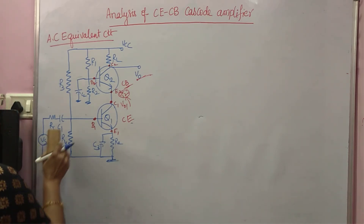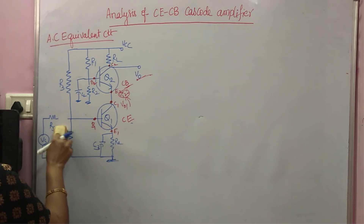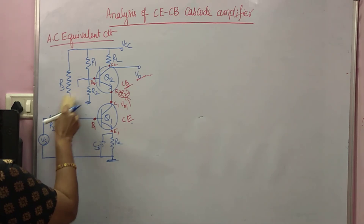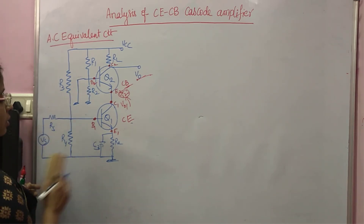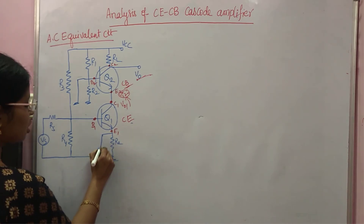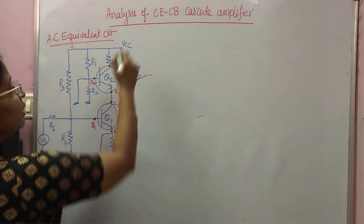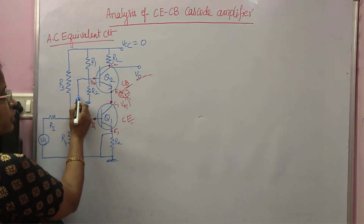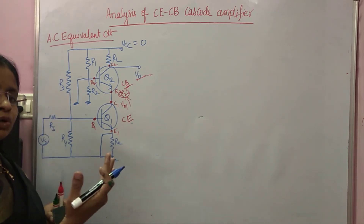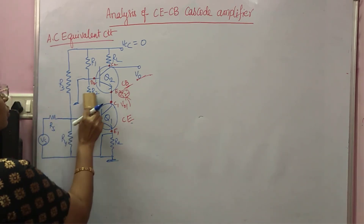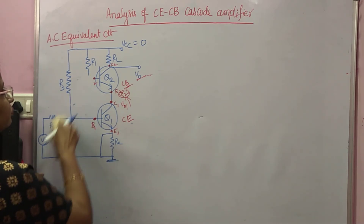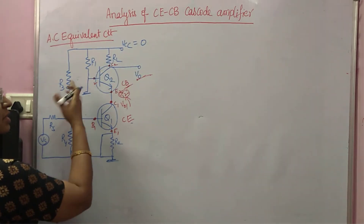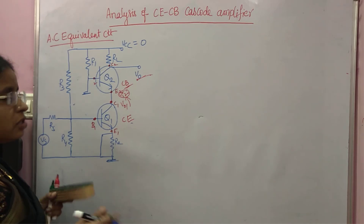Making all capacitors short — starting from C1, then C2 short, C3 also short, and VCC equals zero. Across the short you have resistor R2, so R2 is also shorted. Similarly R1 — this end is zero and this end is also zero, so R1 is also shorted.